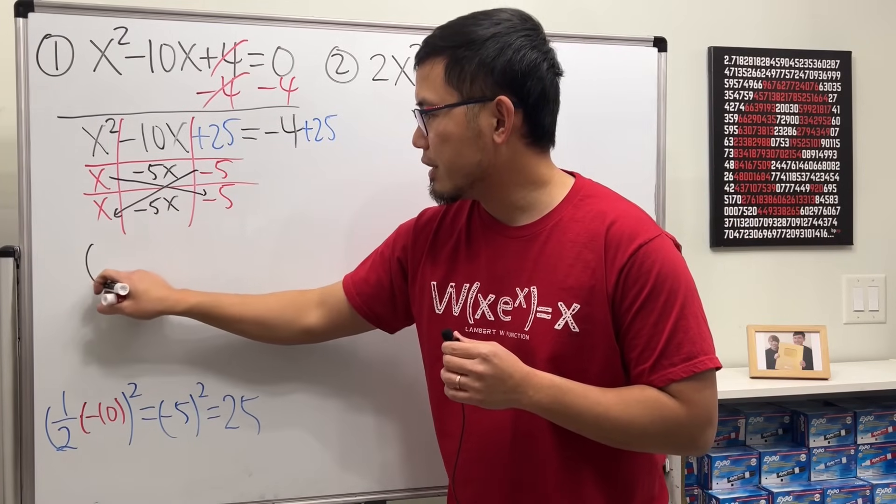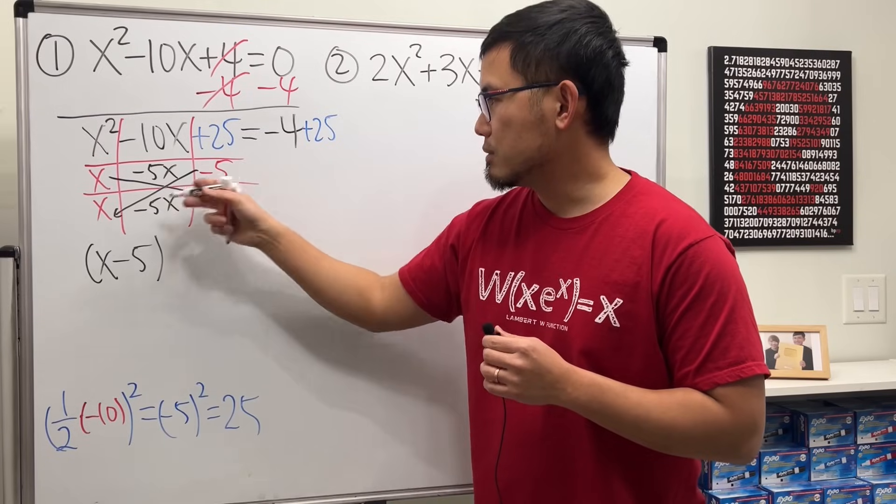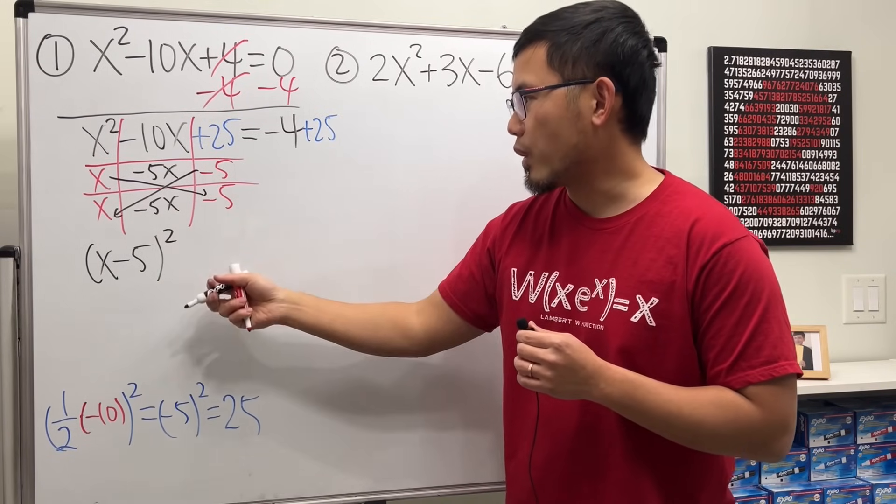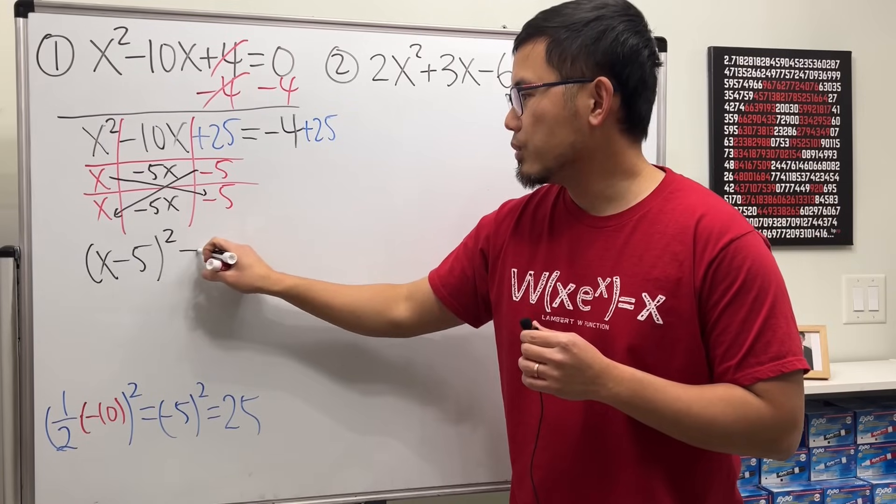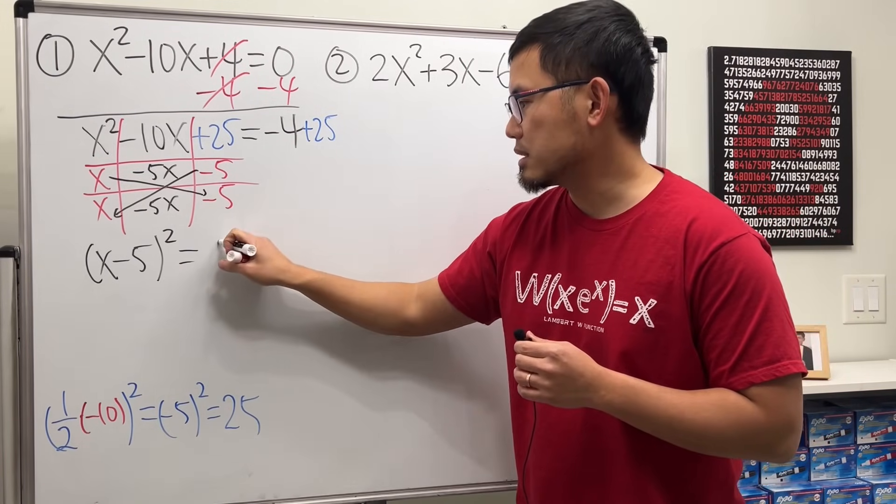So on the left-hand side, the factoring is x minus 5 times x minus 5. So x minus 5 squared. And then that's equal to negative 4 plus 25, which is positive 21.